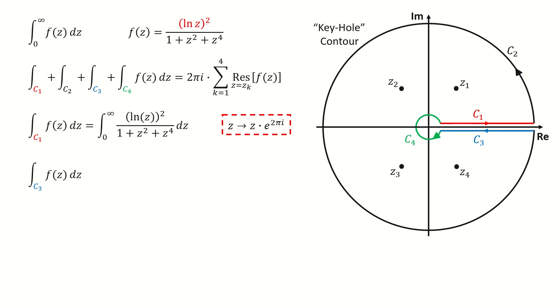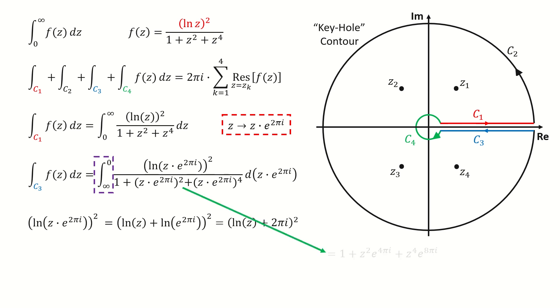So for this integral on c3, we will replace z by z times e to the 2πi. And note for the lower and upper limit here. If you look at the arrow direction on this blue line, which is the c3, it's from the infinity to the original point. So the integral is from infinity to 0. And then we simplify the numerator first. So we write the product into the sum. And then the second term equals to 2πi.